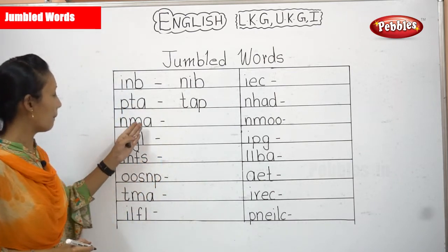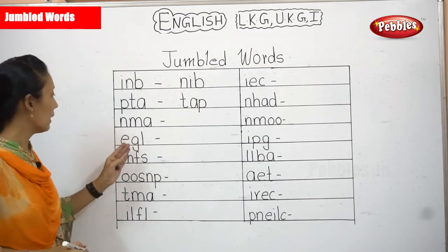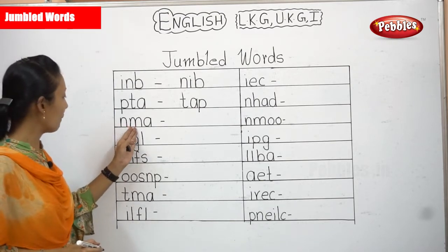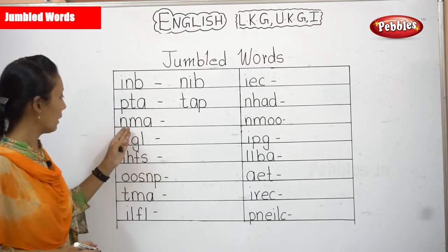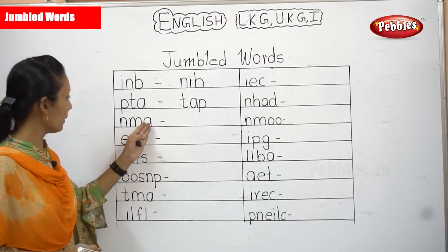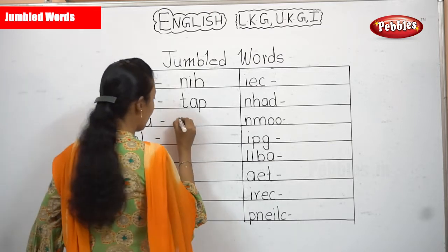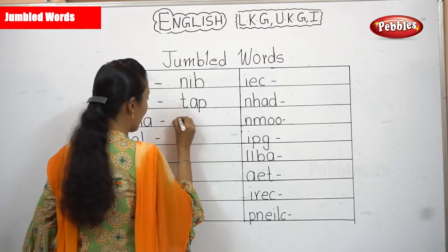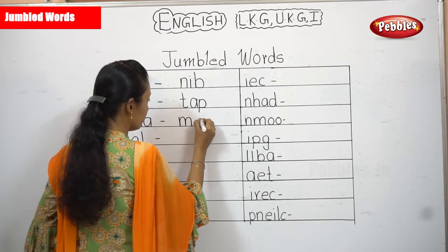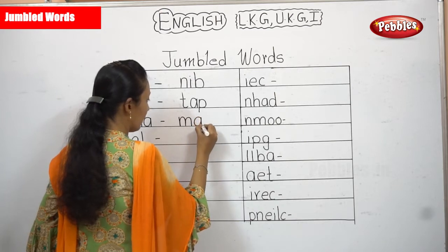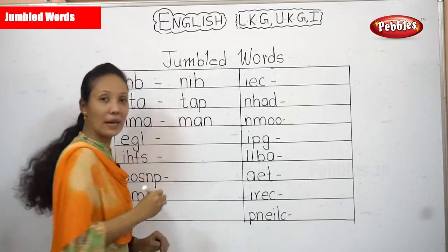Next one: N, M, A. There's no word. Now we'll start with the next arrangement. MNA — no. What about M, A, N? Yes, we have a word called MAN. MAN.